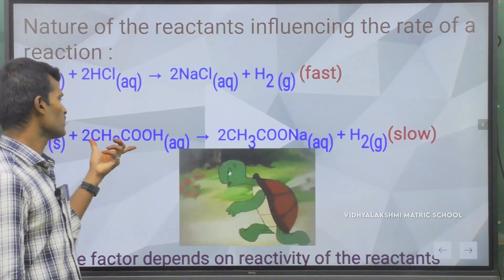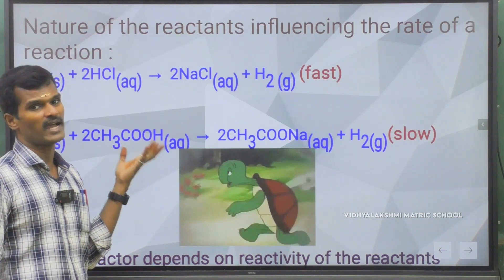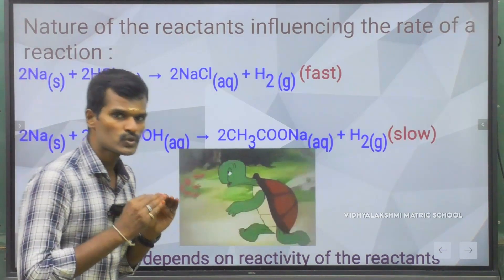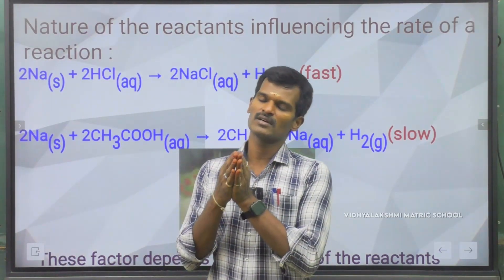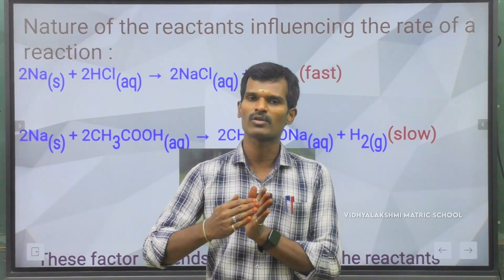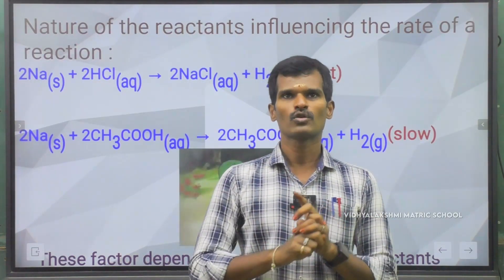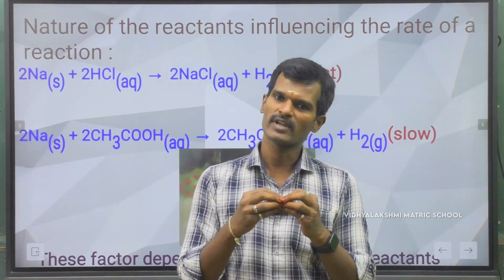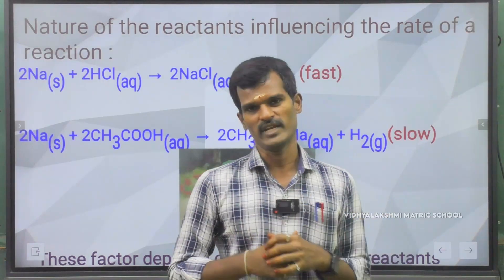The reason is that the acetate ion cannot release its hydrogen ion as easily. So the process is too slow. Therefore the reaction rate depends upon the nature of the reactant, and the first factor — nature of the reactant — perfectly depends upon the reaction component.